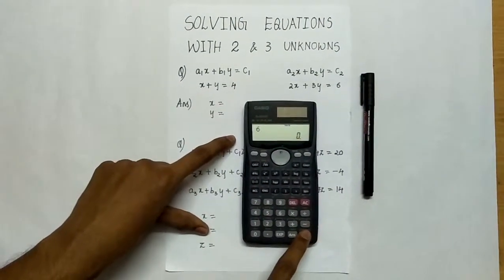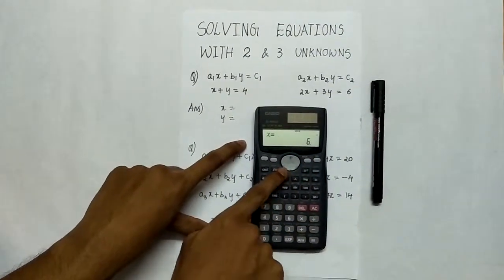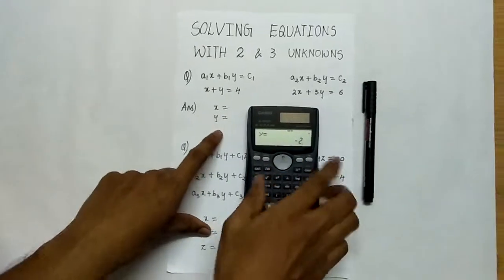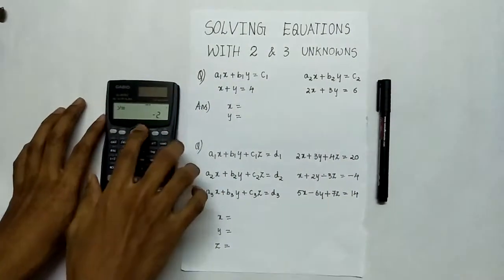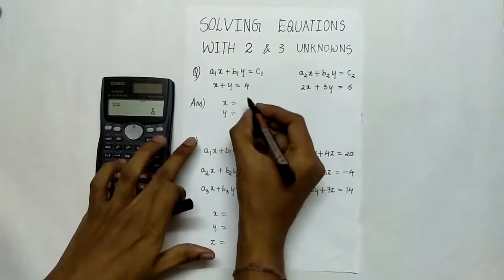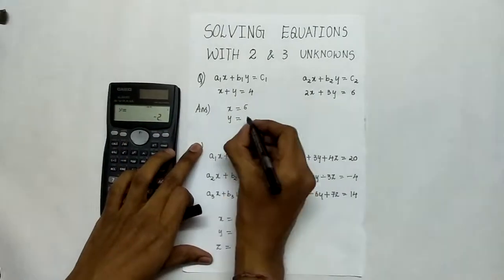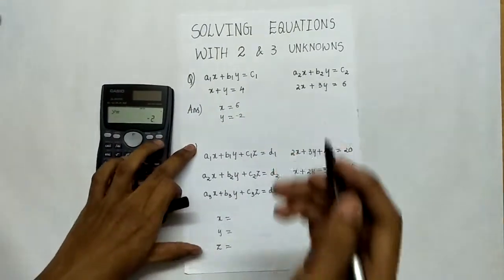You get the roots, x is equal to 6. Press the down arrow button, get y is equal to minus 2. So let us note down these values where x is 6 and y is minus 2.